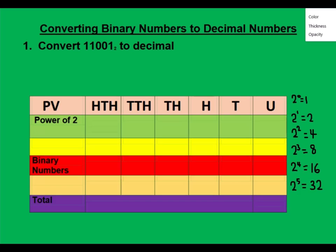To solve this, step one: write the numbers out — it has to be spacious. So we have zero, zero, and one. I'm going to put the place value of each of these numbers: zero, one, two, three, and four.